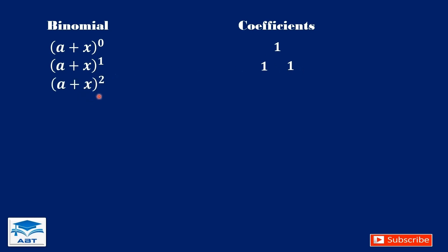If the binomial has an exponent of 2, we start with 1. Then 1 plus 1 is 2. Then we end with 1.